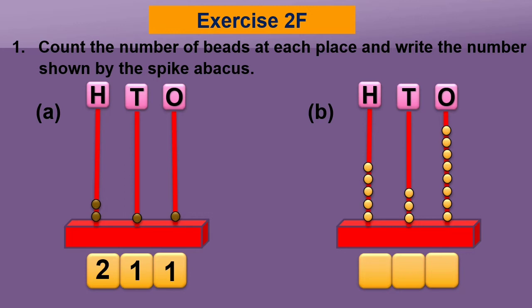Next question: how many beads in the ones spike? One, two, three, four, five, six, seven, eight — so write eight in the ones place. There are three beads in the tens spike, so write three in the tens place.